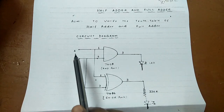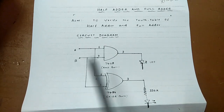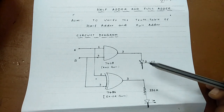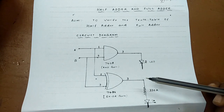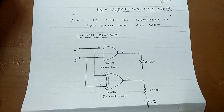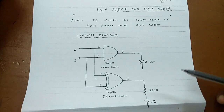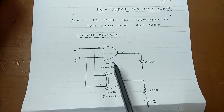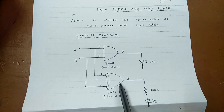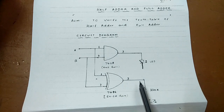The half adder consists of two inputs, A and B, and two outputs — one is SUM and the other is CARRY. The half adder is the combination of the XOR gate and the AND gate. The output of the AND gate is the CARRY and the output of the XOR gate is the SUM.